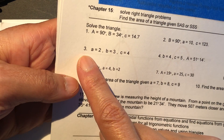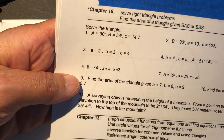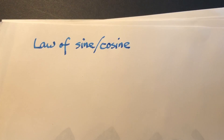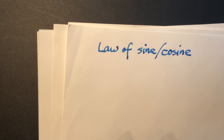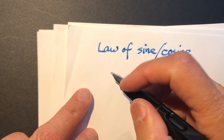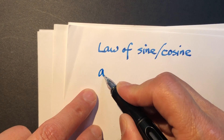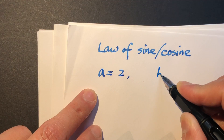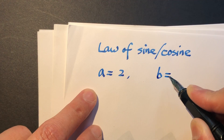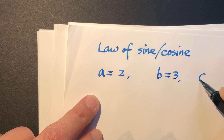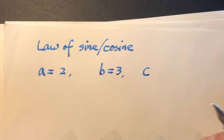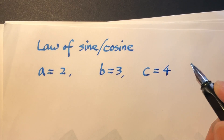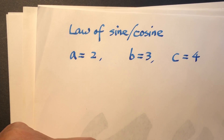Question number 3 looks like a good example, so we will go ahead with this one. We know A equals 2, B equals 3, C equals 4, and we solve this triangle.